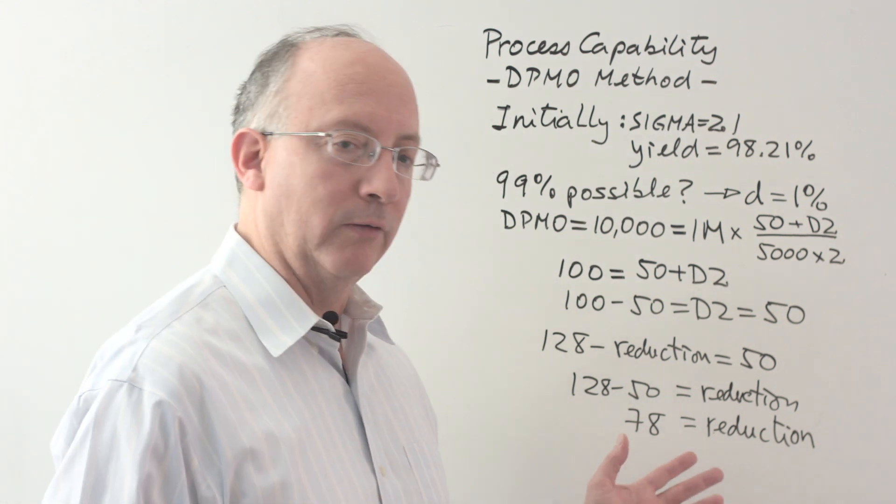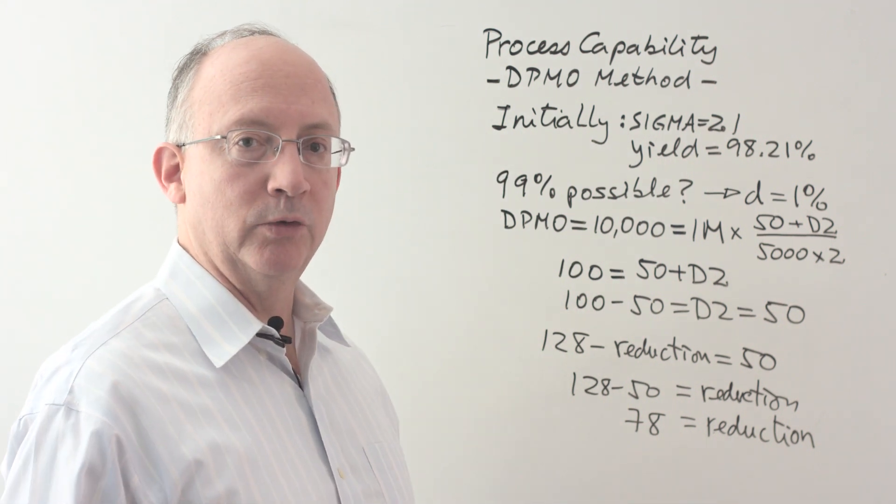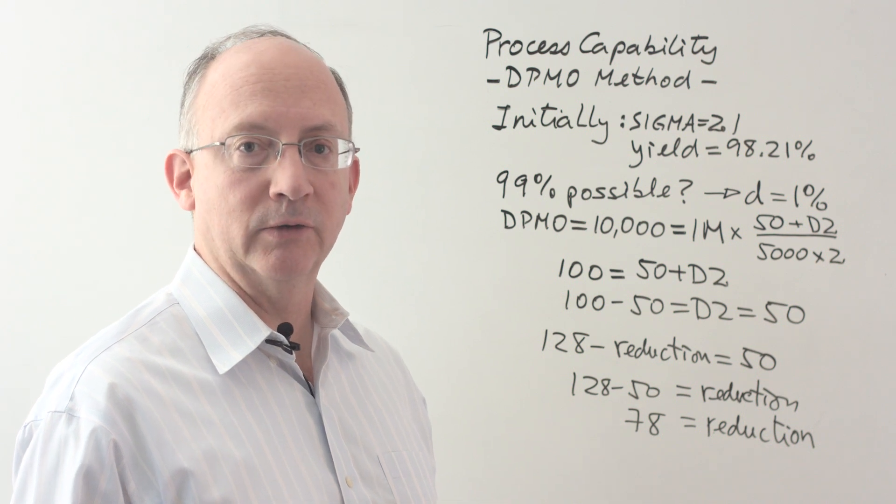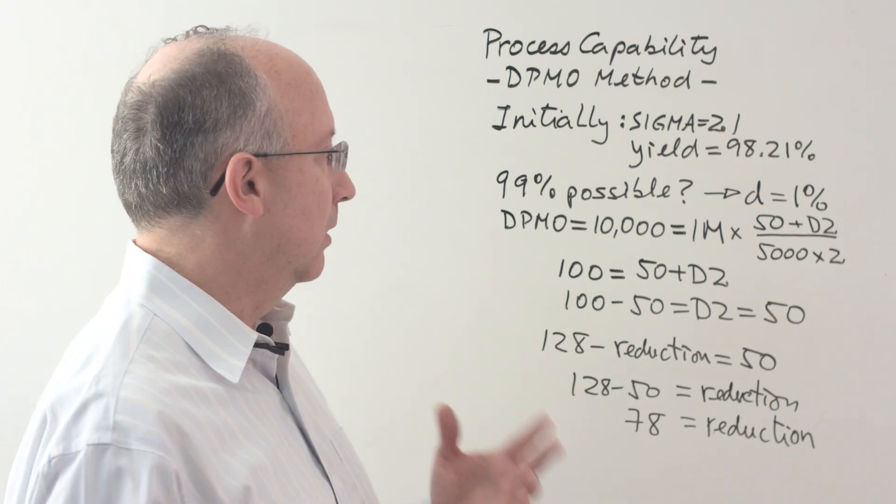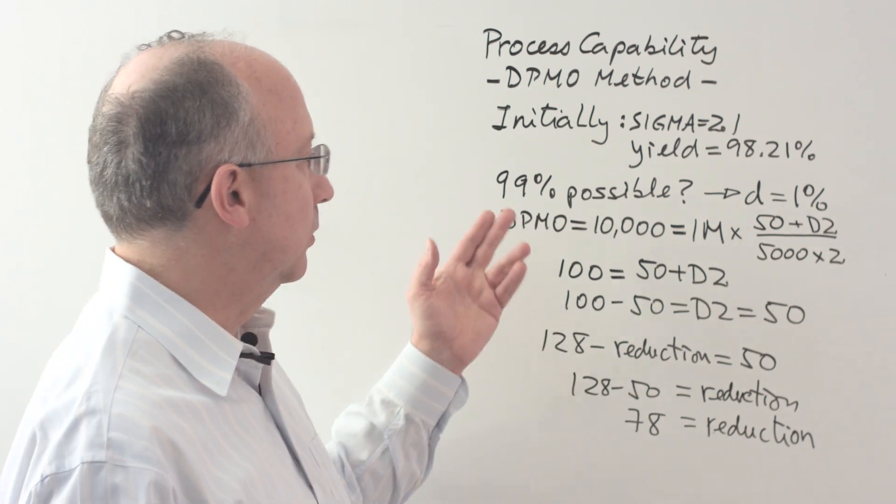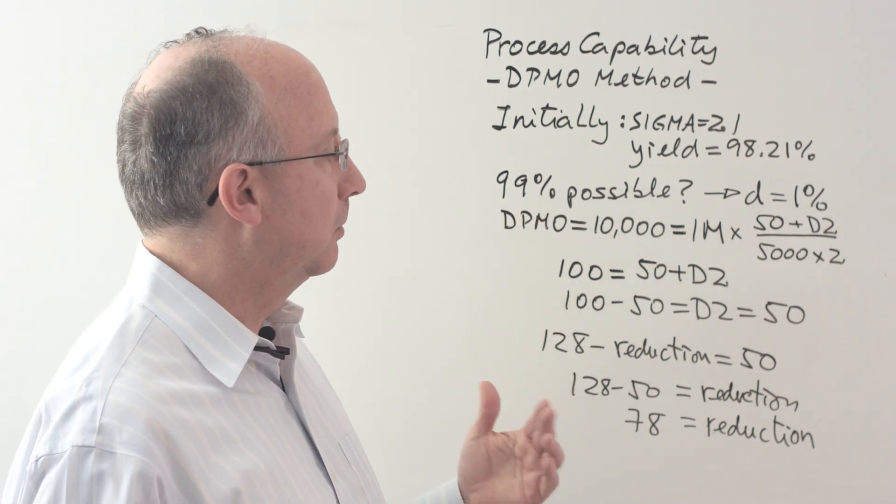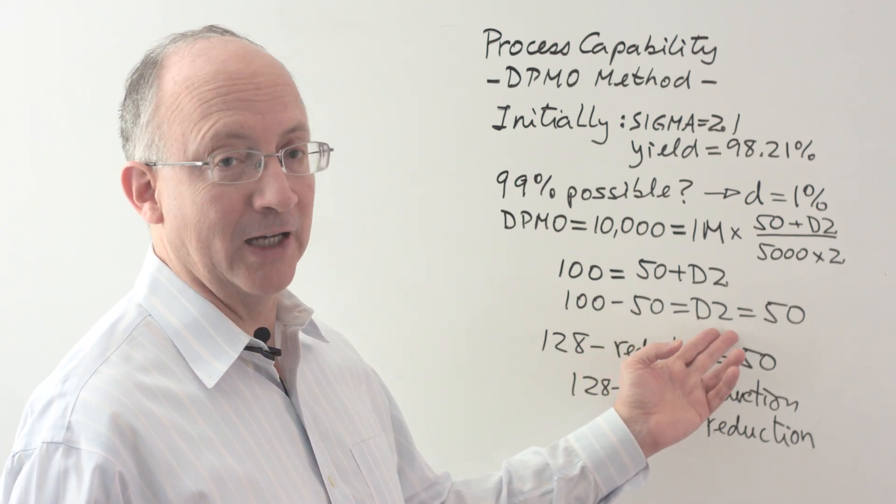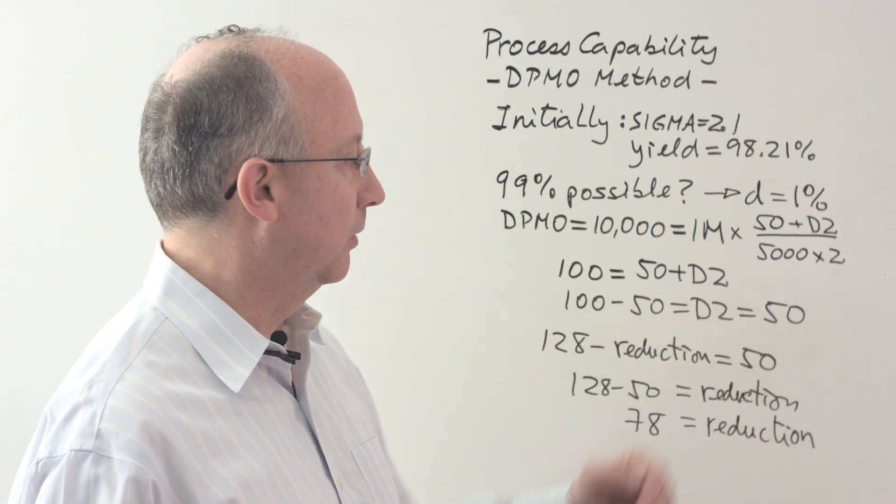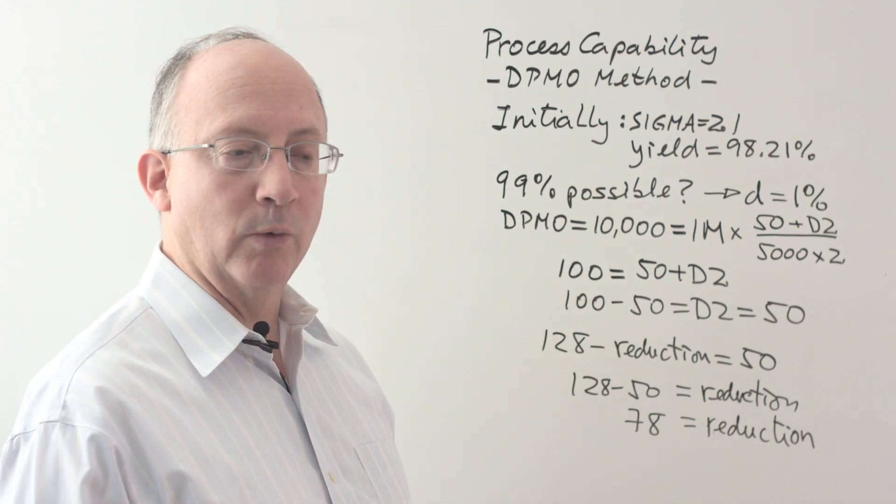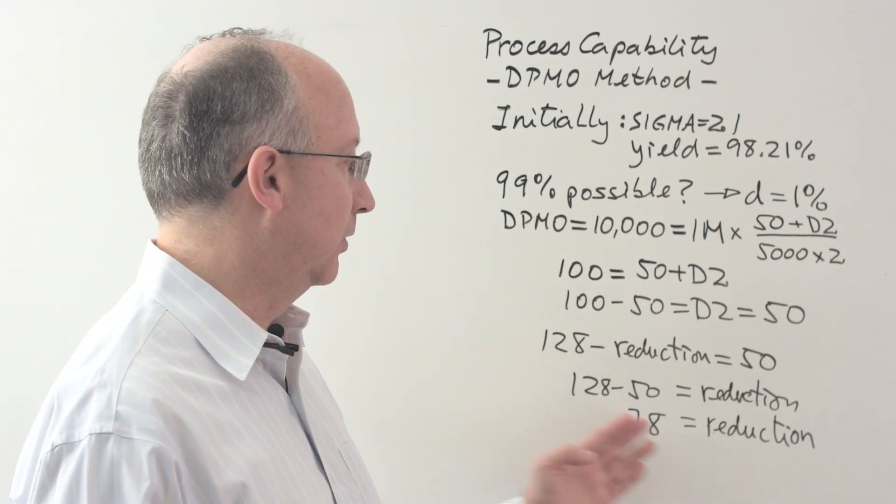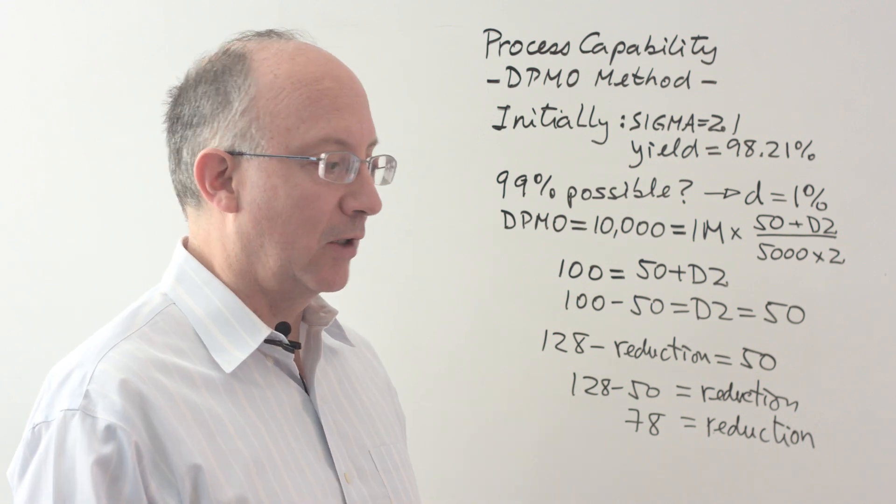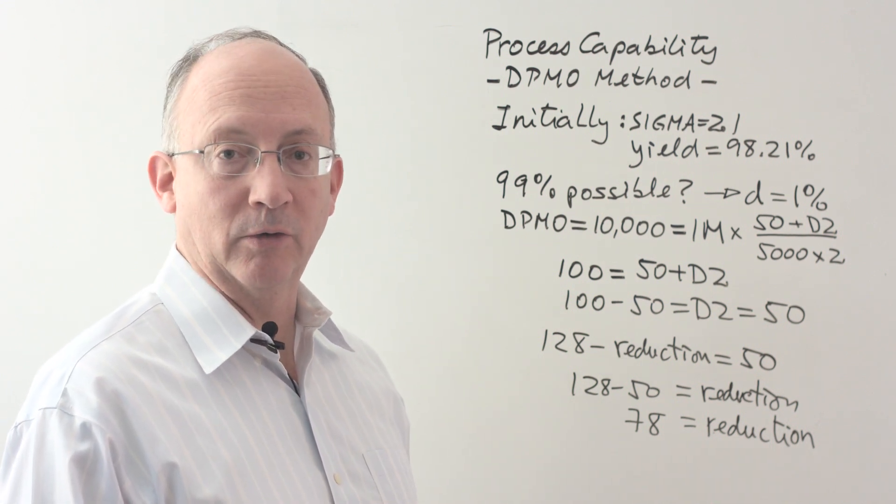This would be the number that you would then put in the scope or in the charter or the objective of a project that says, if what we really want to do is to get to 99%, is it possible? Yes, it is possible, because the number of incomplete deliveries is not a negative number, but positive. We need to get to 50, but because we started with 128, that means we need to reduce this by 78. That can give us an intermediate target in order to get to a higher level of performance.